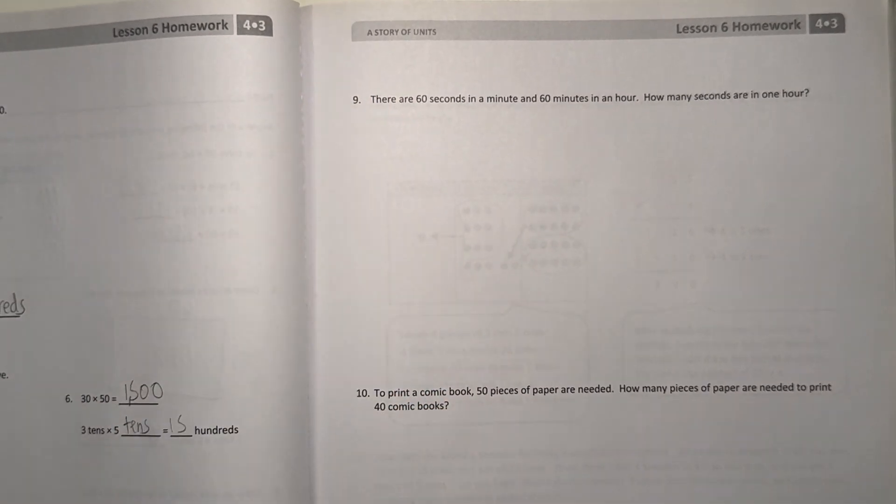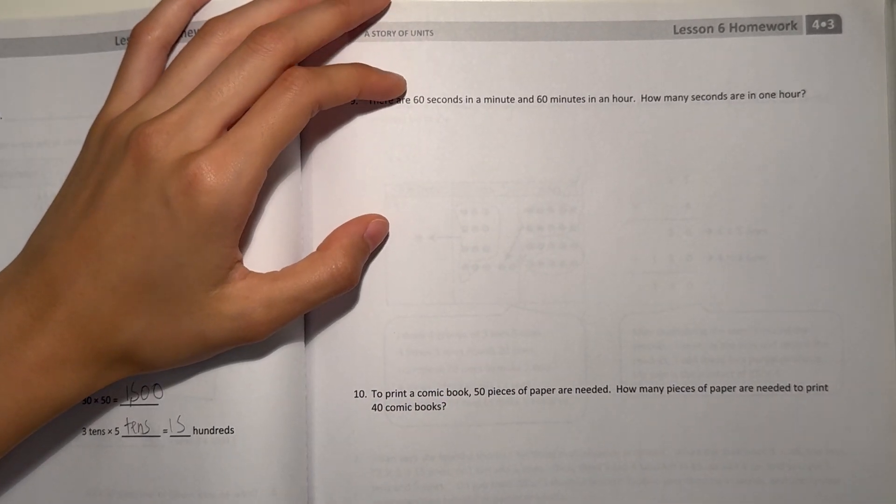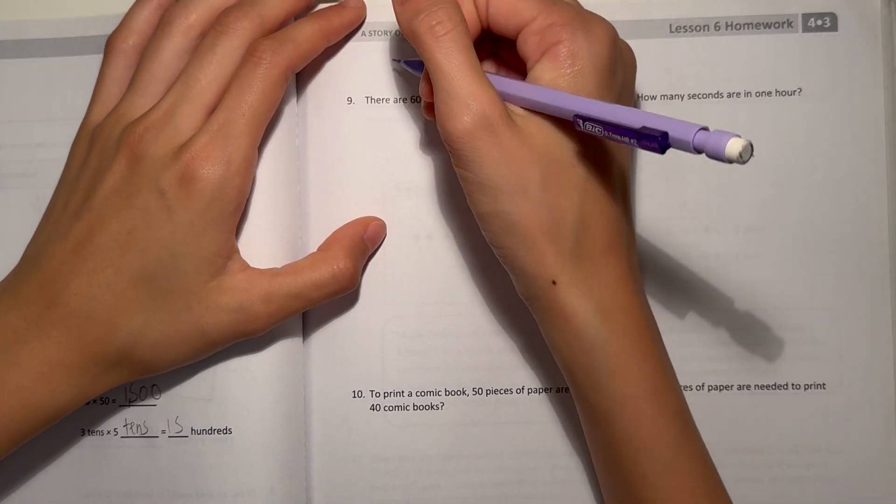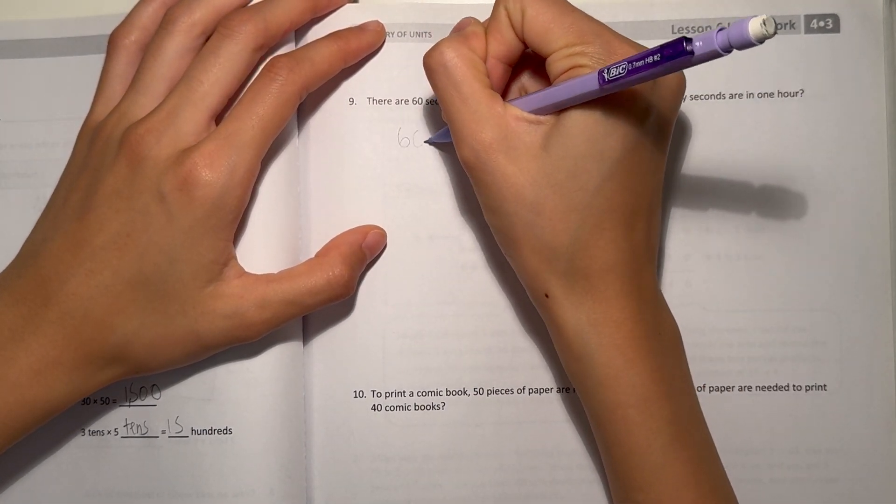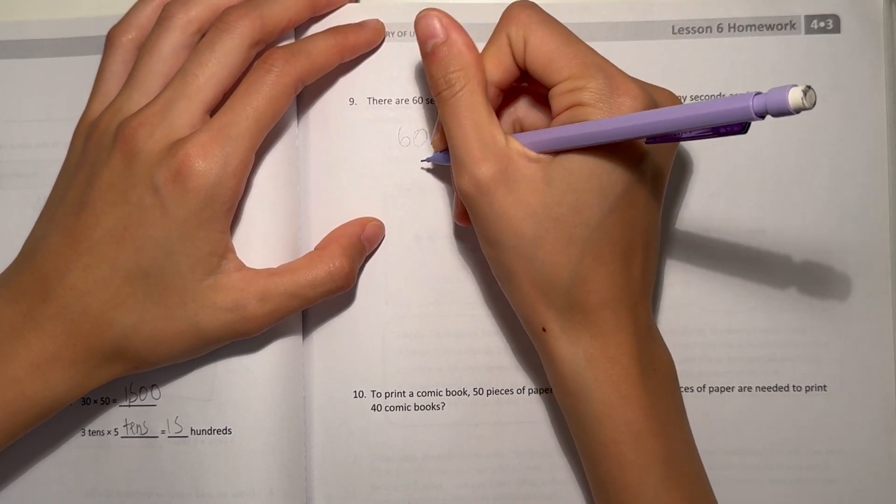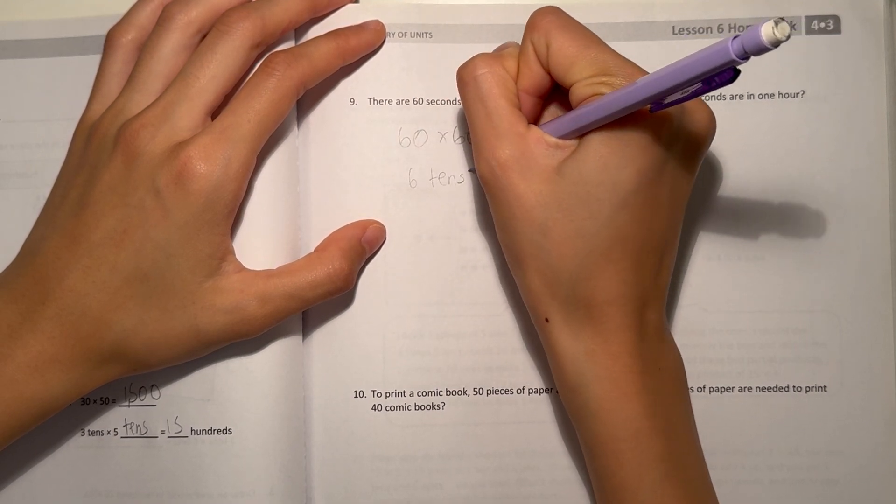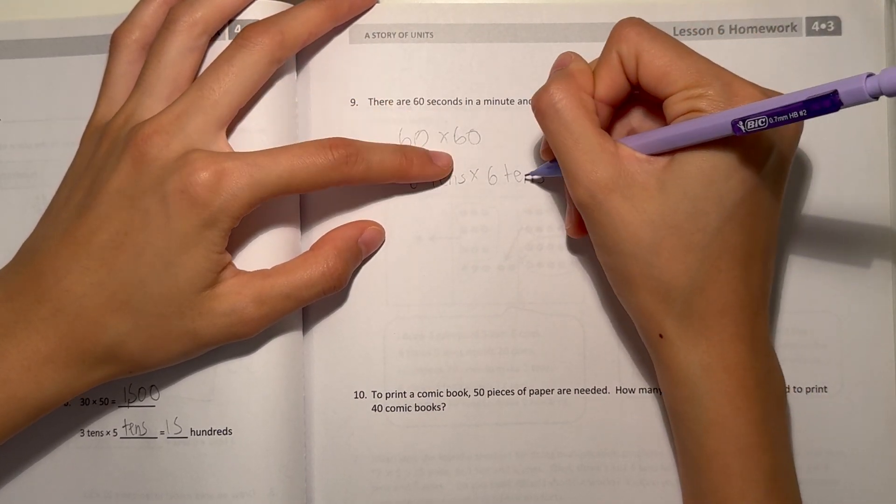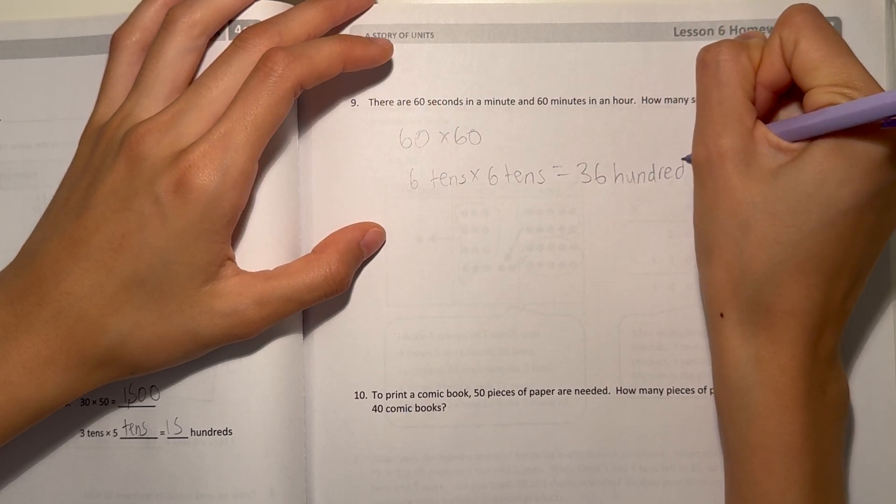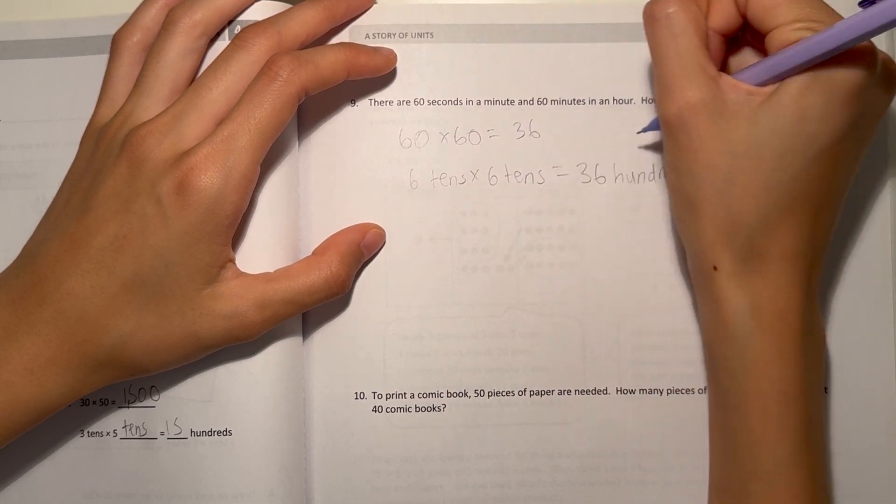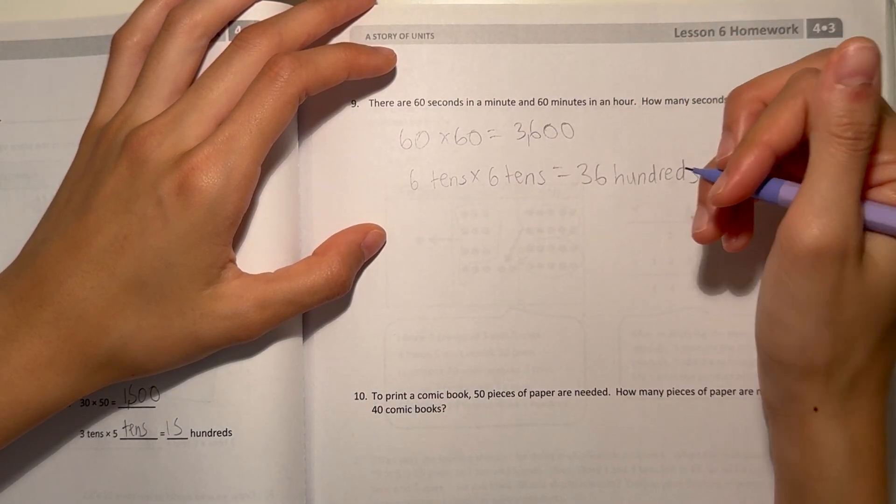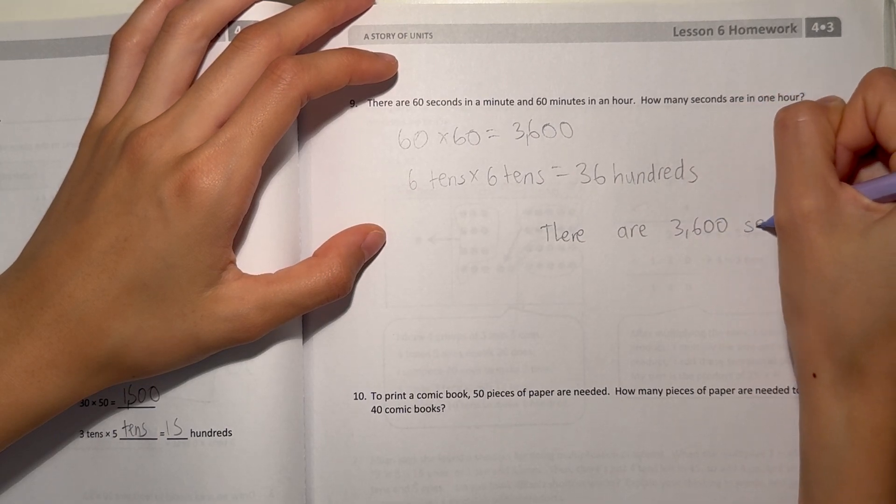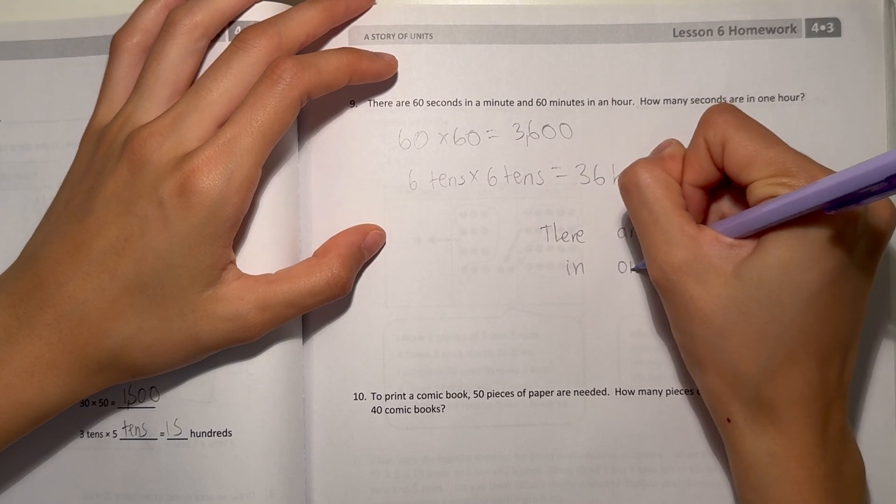Number nine. There are 60 seconds in a minute and 60 minutes in an hour. How many seconds are in one hour? There's 60 minutes in an hour, 60 seconds in a minute. To find how many seconds are in an hour, all we need to do is 60 times 60, which is 6 tens times 6 tens equals 36 hundreds. Just write 36 and the two zeros at the end, 3,600. So that means there are 3,600 seconds in one hour.